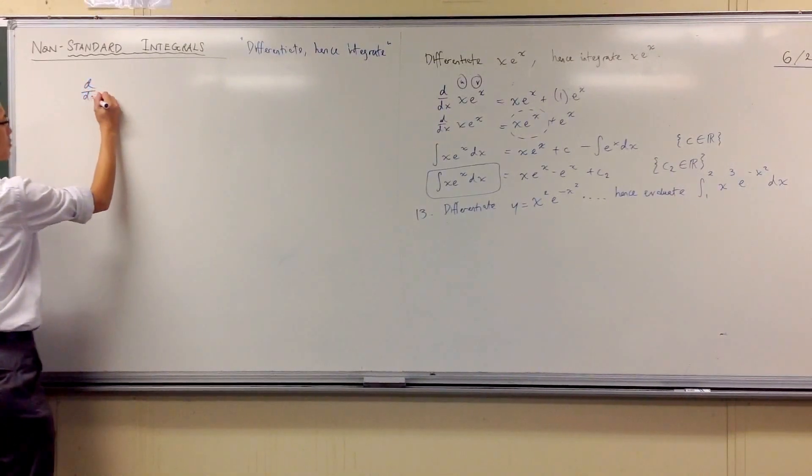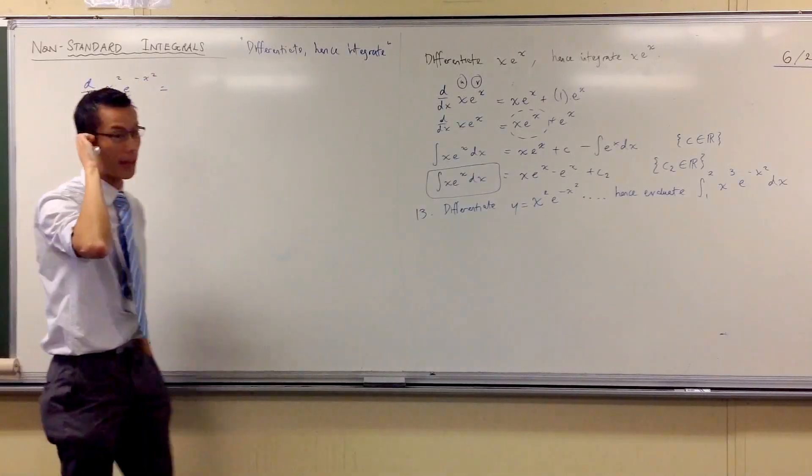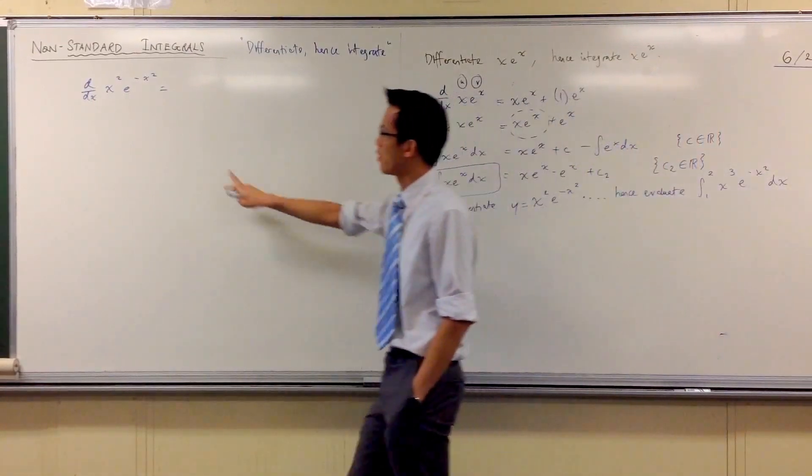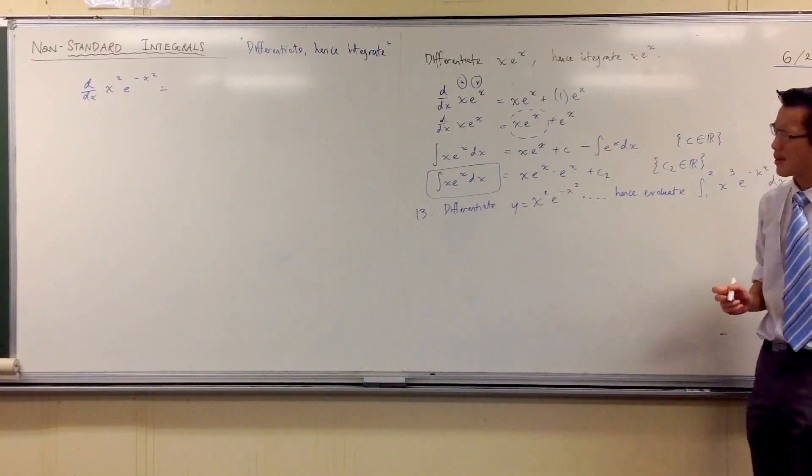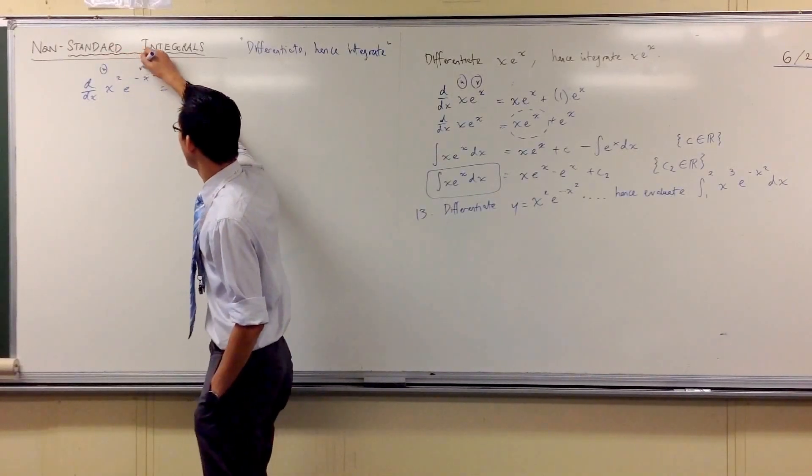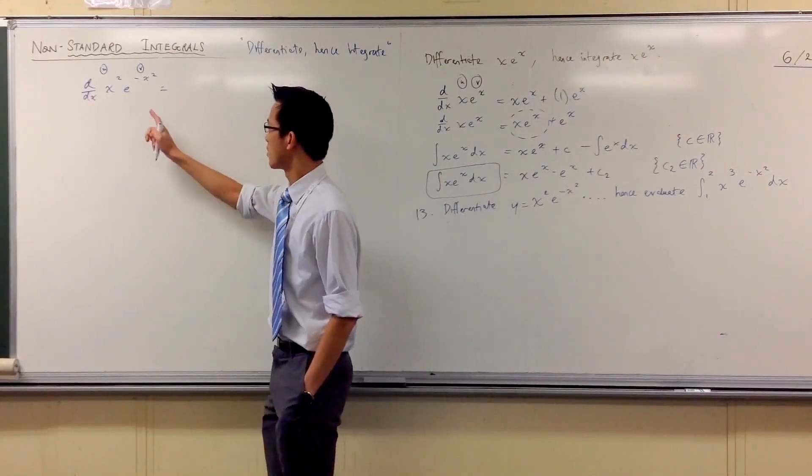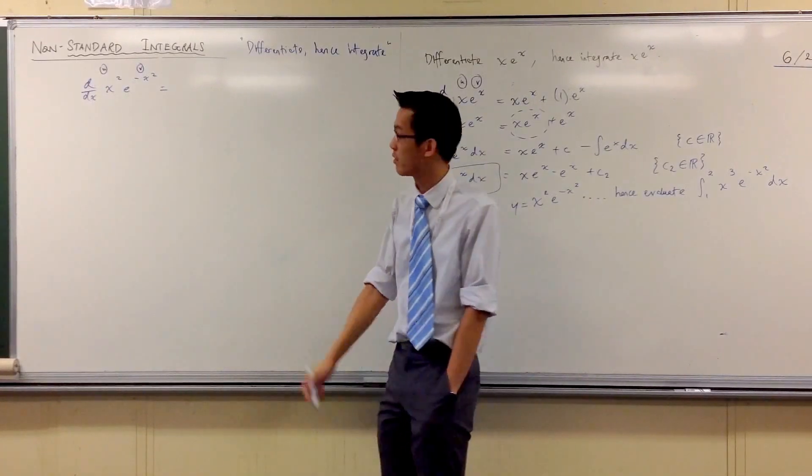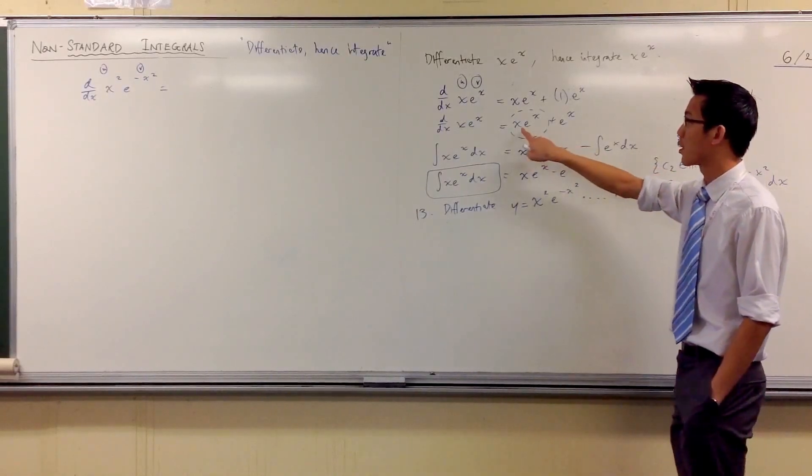So let's start off. The derivative of x squared e to the minus x squared. Let's have a go. There's product rule here, there's also chain rule, but it's an easy chain rule. Chain rule is pretty simple. So what should we write? What's the first thing? There's u here and v here. So depending on whether you do v u dash or u v dash, doesn't matter because it's a sum. So let's do u v dash. So we were going u v dash over here.